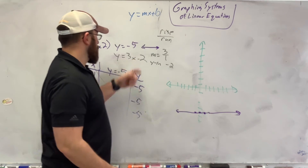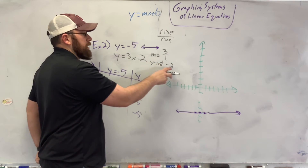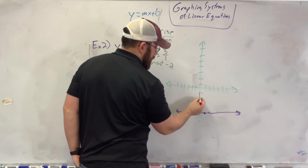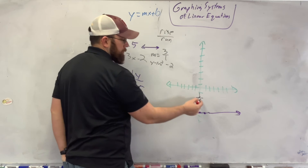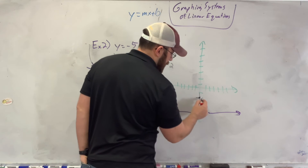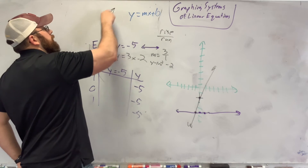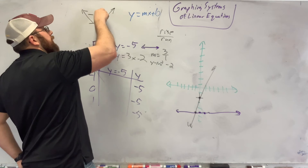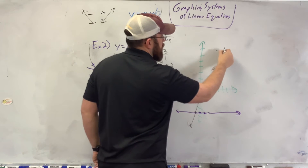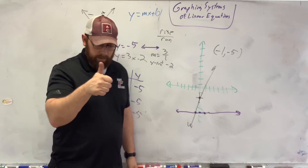Now I'm going to graph the second equation. My slope is 3 over 1 and my y-intercept is negative 2. Rise over run: I start at negative 2 and go 3 up over 1. They cross at (negative 1, negative 5), so that is the solution. If I plug (negative 1, negative 5) into both equations, it works.